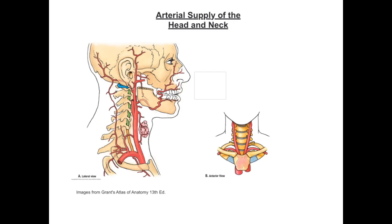In this short video tutorial, we're going to consider the arterial supply of the head and neck structures. The first artery that we need to concern ourselves with is the common carotid artery, of which there are two — one on the right and one on the left.